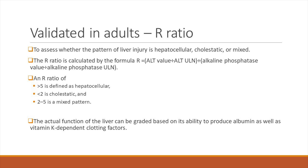The actual function of the liver can be graded based on its ability to produce albumin and vitamin K-dependent clotting factors. We always have to remember that no single parameter can be interpreted alone — sometimes these parameters just help us to understand how the liver is behaving, if it is improving or not, if the injury is aggravating or not. So each parameter has to be coupled with other parameters to come to a conclusion about what kind of injury the liver is having and if it is improving or not. Thank you.